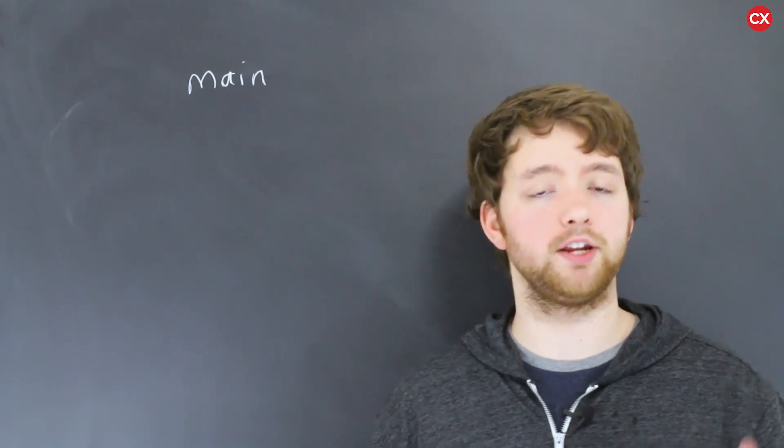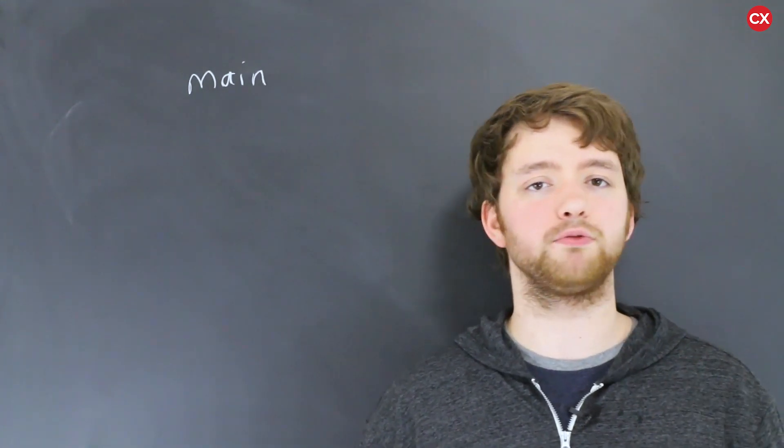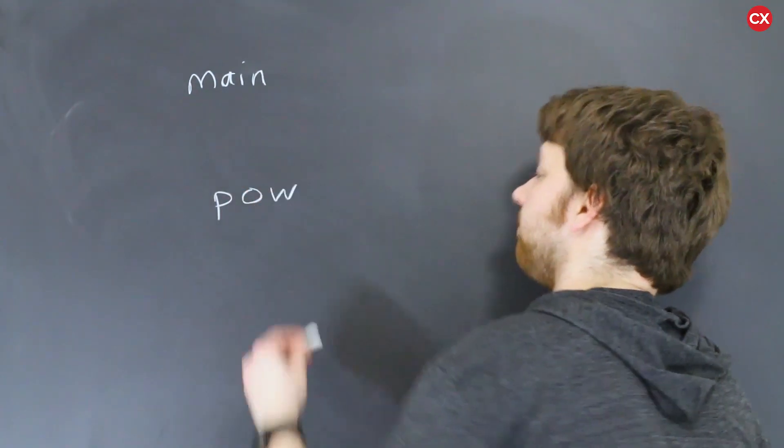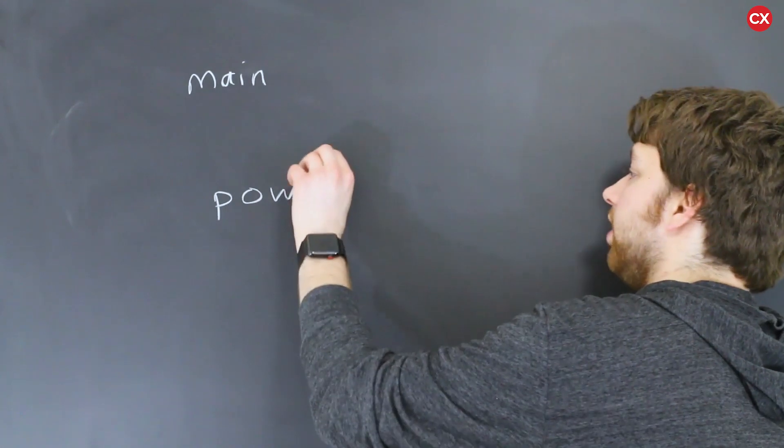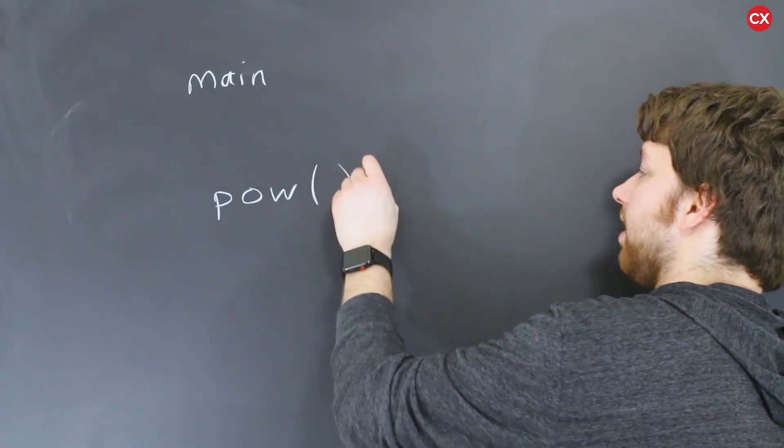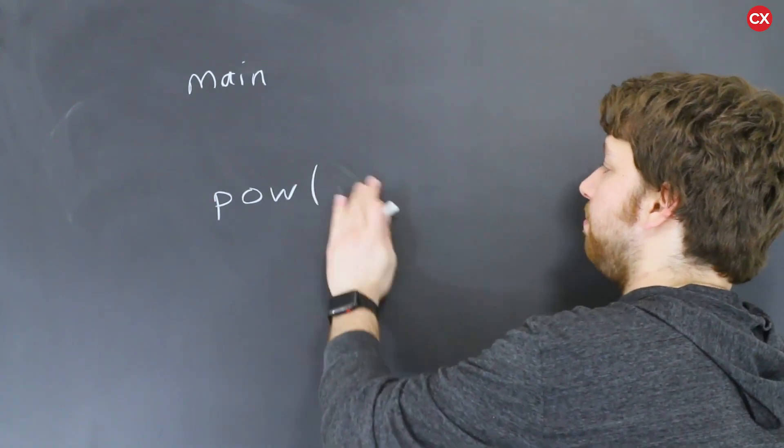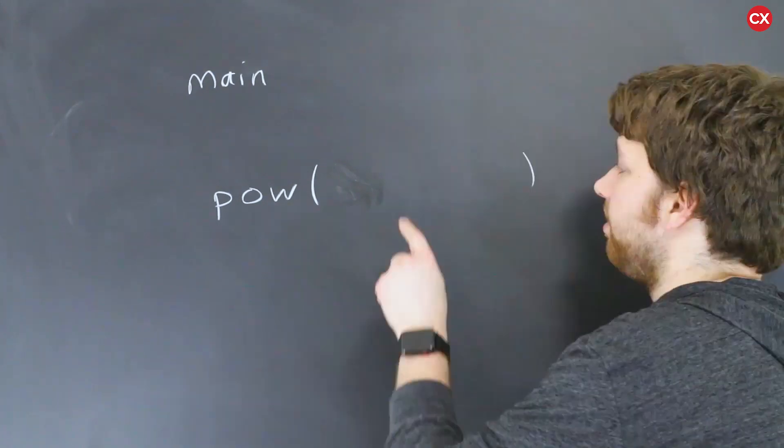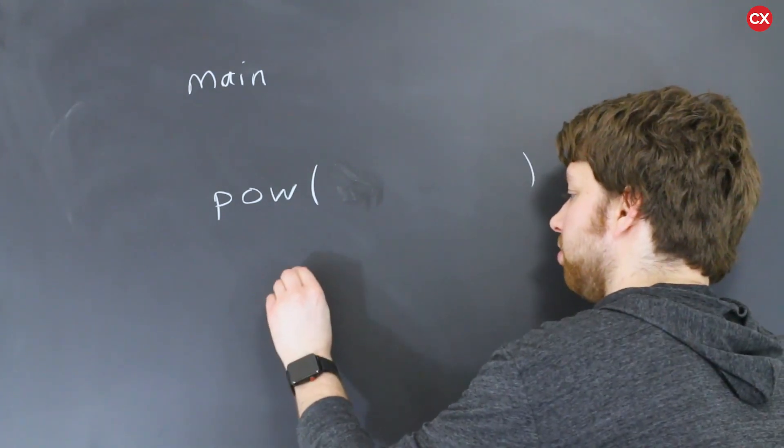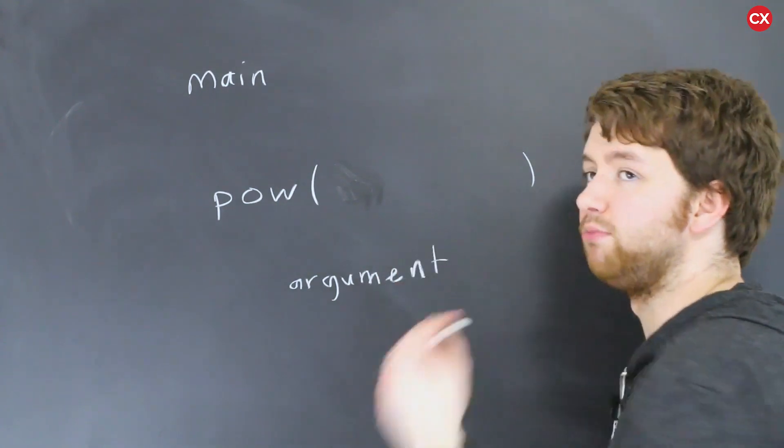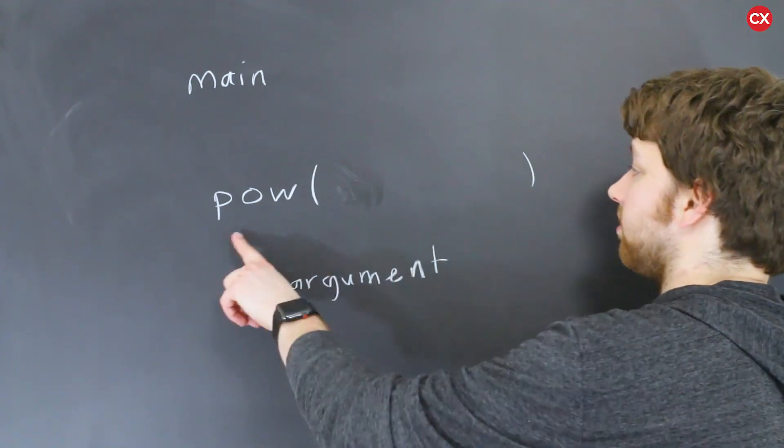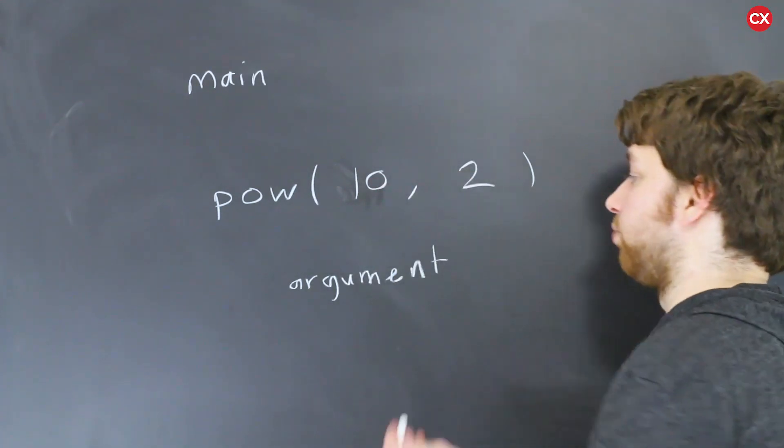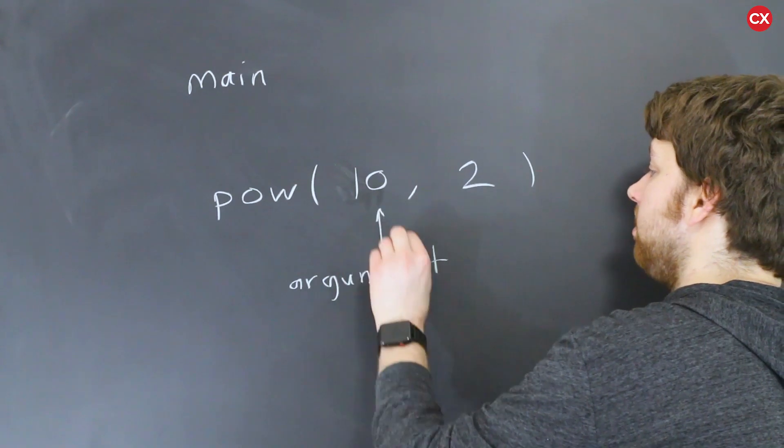There are a lot of functions that are already created for our use, so we don't have to recreate the wheel over and over and over again. When you call a function, you say the function name such as pow for power and then you put parentheses. Now sometimes you'll have empty parentheses like so. Other times you'll put data in there or you'll pass data in there as the official technical term. The data that you pass in there is known as an argument and oftentimes you will need more than one argument. So for example, for power you could pass in 10 and you could raise it to the second power. In this situation we would have two arguments, 10 and 2.